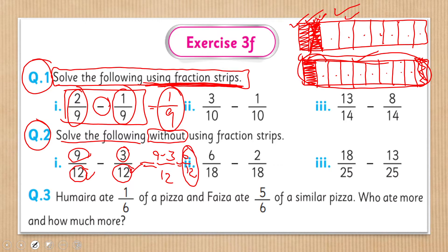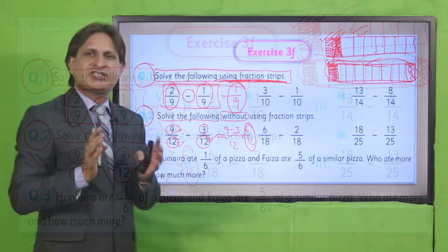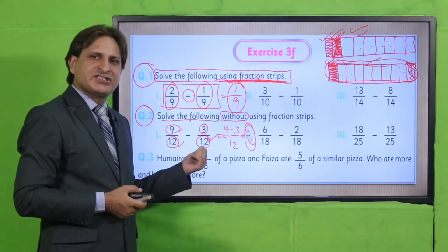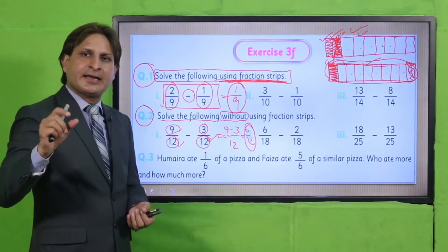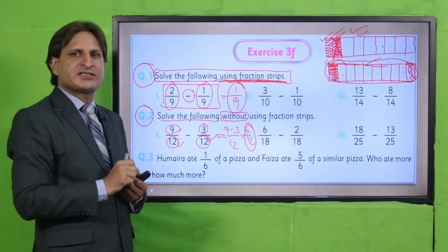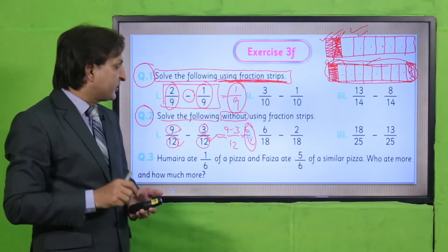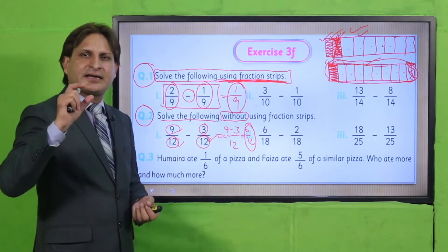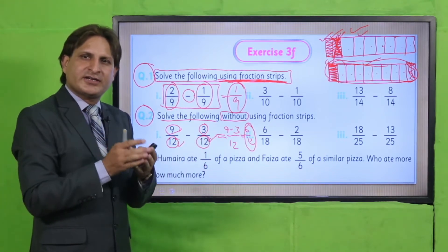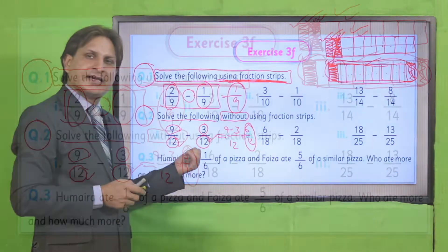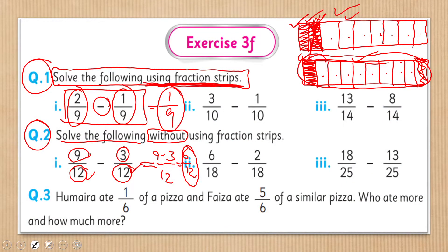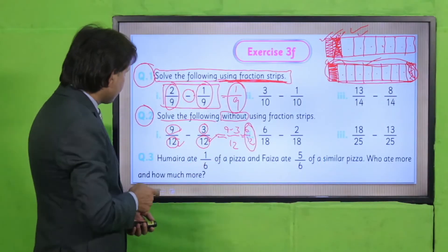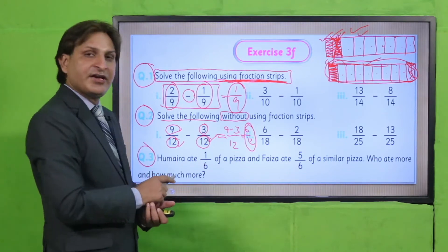अगर दो given fractions unlike fractions हों — यानी जिनके denominators different हों — तो आपने उनके denominators को same करना है, यानी like fractions में convert करना है, जैसा कि मैंने पहले بتایا हुआ है। Convert करने के बाद फिर subtraction करनी है।